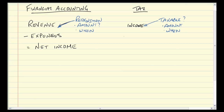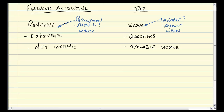On the expense side, again, we use the word expense, but really in tax what we talk about are deductions. But they're just expenses. And so the net income that we're trying to get down to is taxable income — the amount that we will apply a tax rate to, to come up with the tax that is paid.